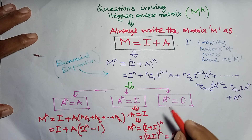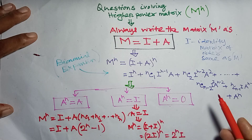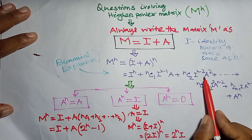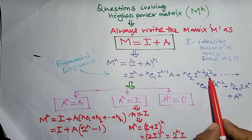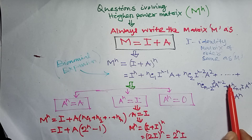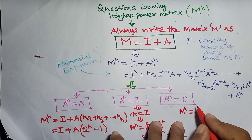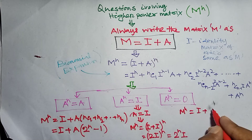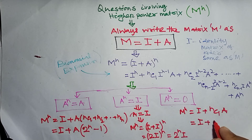Case 3: A^n equals the null matrix. In this case all higher-power terms in the binomial expansion become null matrices. The only surviving terms are I^n and nC1·I^(n-1)·A, giving M^n = I + n·A.